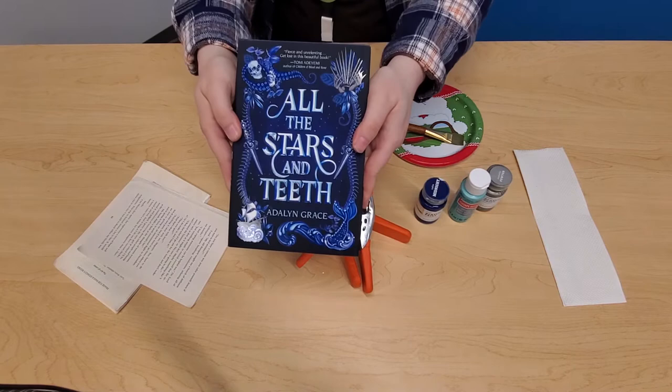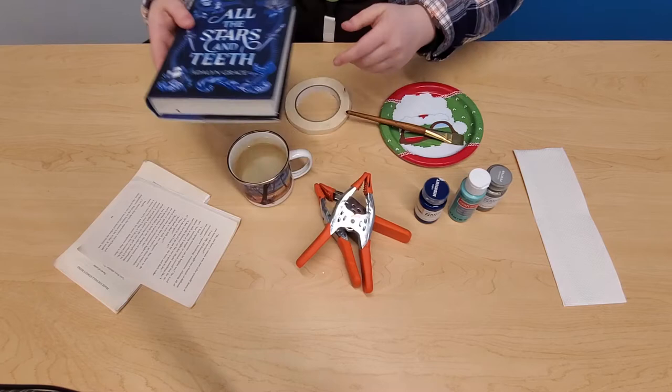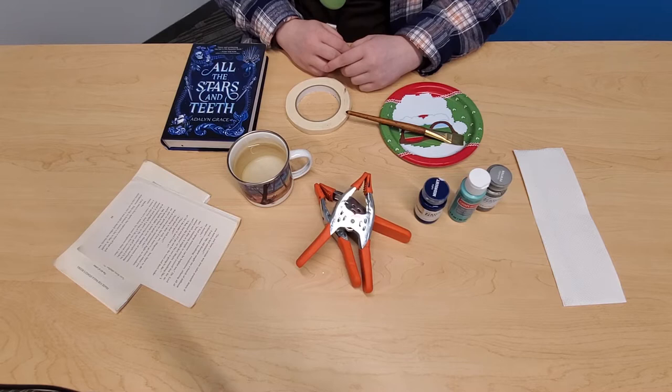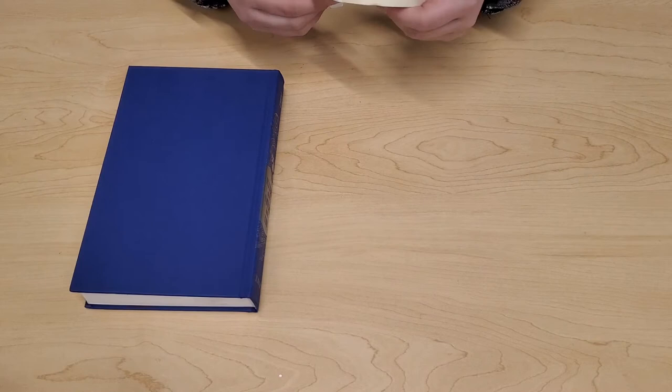Then you'll also need a book and here we have All the Stars and Teeth. It is a young adult fantasy novel. It is excellent. If you would like to read this book or other books like it you can always go to our catalog at catalog.library.loudon.gov and just see what we have which is a lot of cool stuff. And now we're going to go ahead and get started with our project.